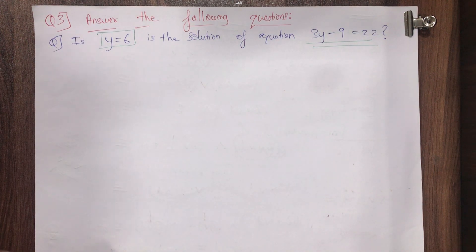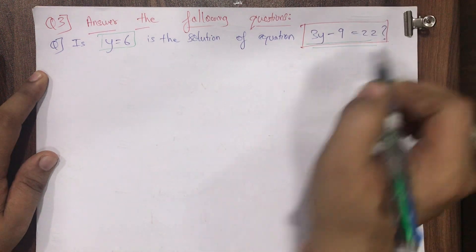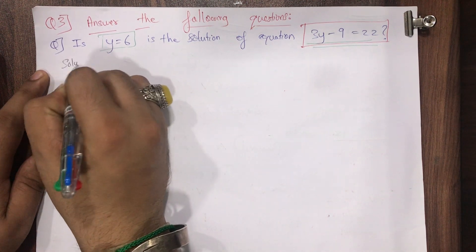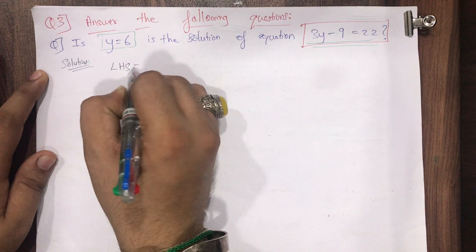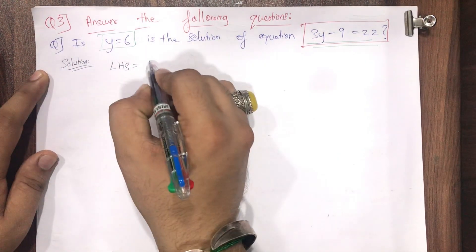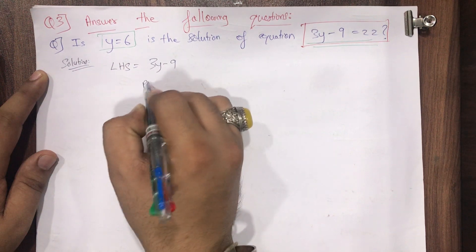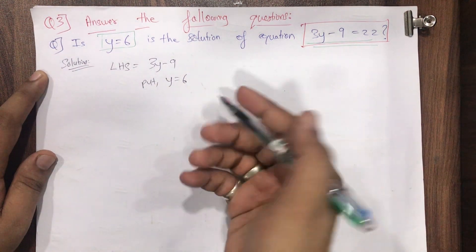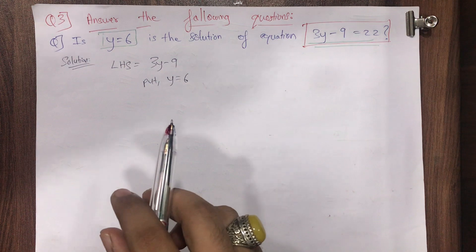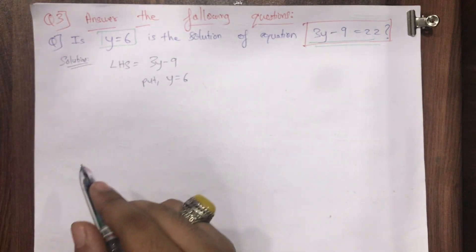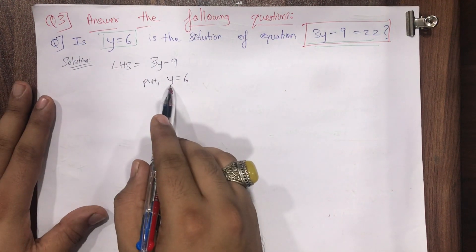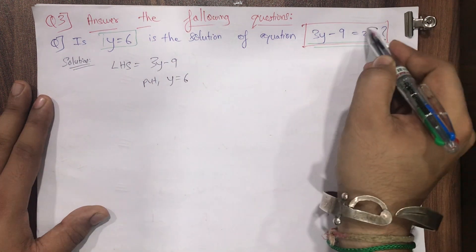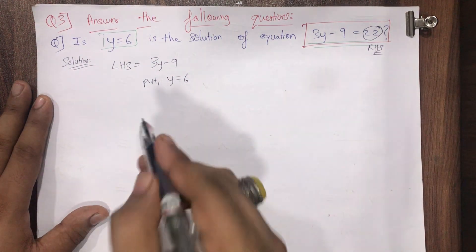How to do that — see over here. The given equation is 3y minus 9 equals 22. In the solution part, LHS means left hand side, which is 3y minus 9. Put y equal to 6. Wherever we have y, I am putting 6, because I need to check whether y equal to 6 is really a solution. If it is the solution, after substituting y as 6 I will get an answer equal to the right hand side, and here RHS is 22. So let's check whether I get RHS as 22 or not.